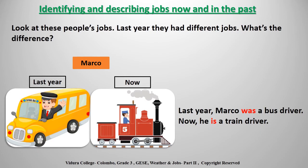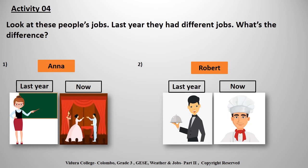Here we have come to the last topic of today's lesson: identifying and describing jobs now and in the past. Look at these people's jobs — last year they had different jobs. What's the difference? This is Marco. You can see two pictures of Marco, last year and now. You can give your answer as: 'Last year Marco was a bus driver. Now he is a train driver.'